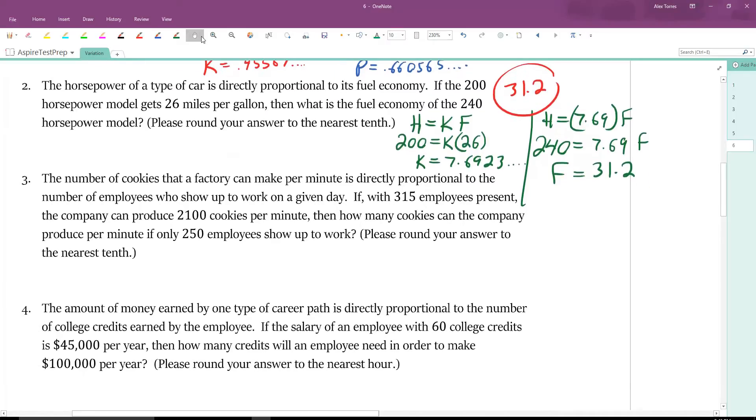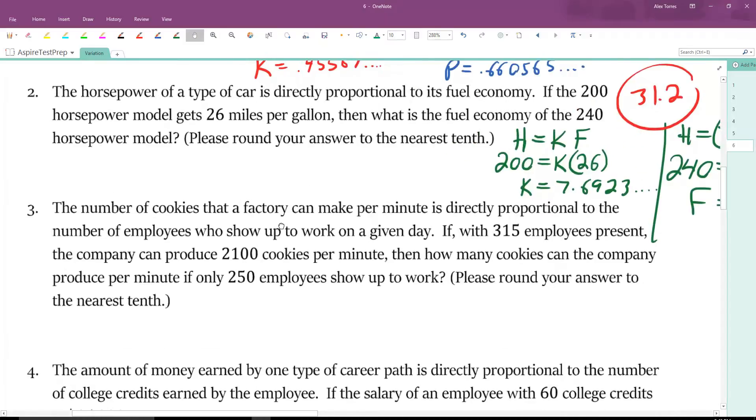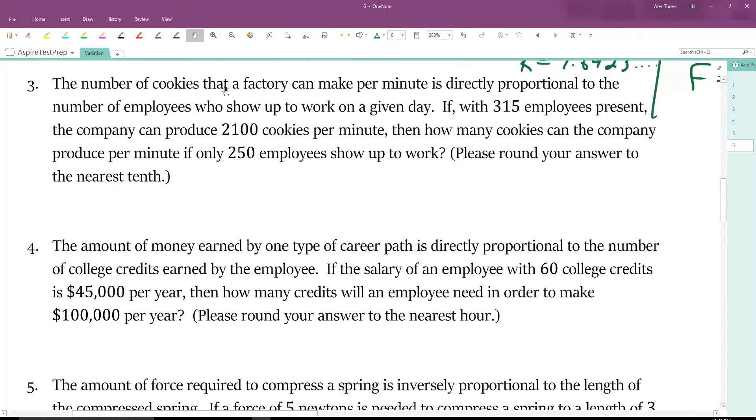Coming over to number three, the number of cookies that a factory can make per minute is directly proportional to the number of employees who show up to work. The number of cookies is directly proportional to the number of employees that show up. We have 315 employees present, and when that happens, we can produce 2,100 cookies per minute. Now, we have enough information to solve for K. It's 2,100 divided by 315, and the number is 6.6 with bar notation, in other words, it's 6.6 repeated. Now we know K. C equals 6.6 repeated times E.